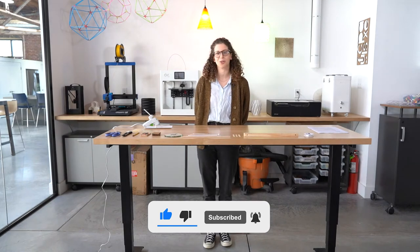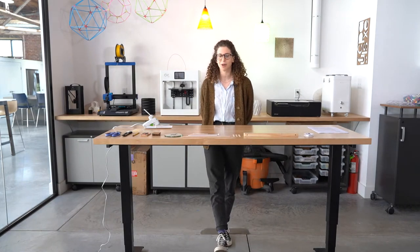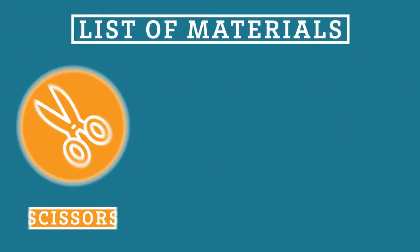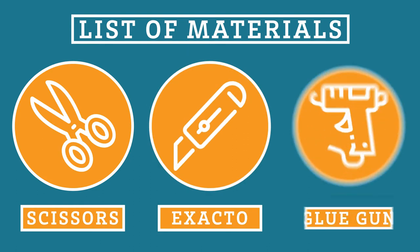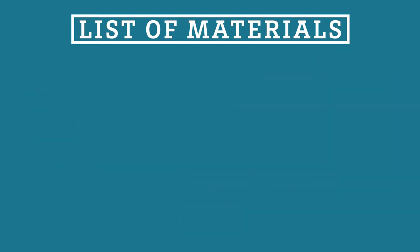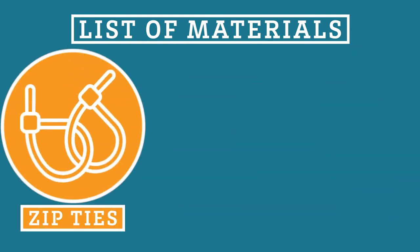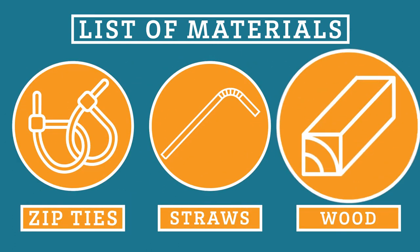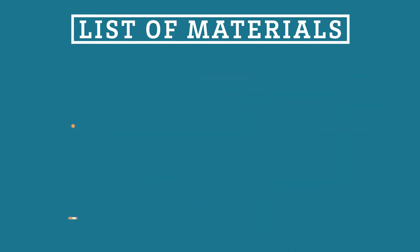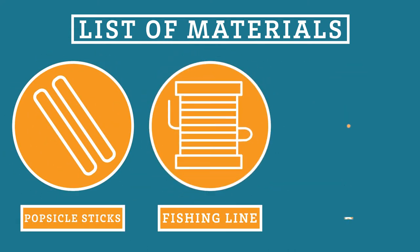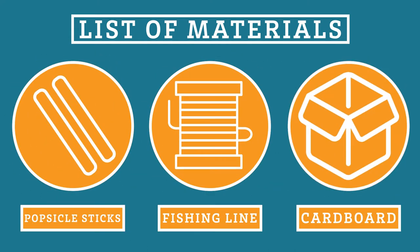So for our first episode we're going to be making a mousetrap car. I have all my materials here. I have some tools I'm going to need to make the car, some scissors and an X-Acto knife and my glue gun. I have my very important mousetrap. I have some CDs and I have some wooden dowels and some zip ties and a single straw, these two pieces of wood and some popsicle sticks. And then finally I have some fishing line which is going to be super important.